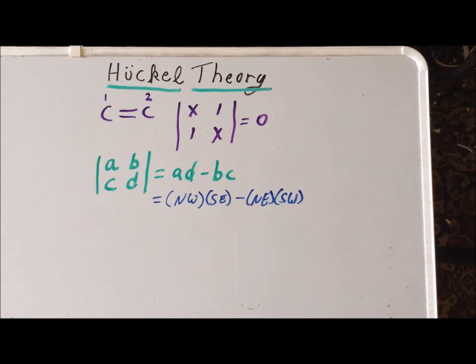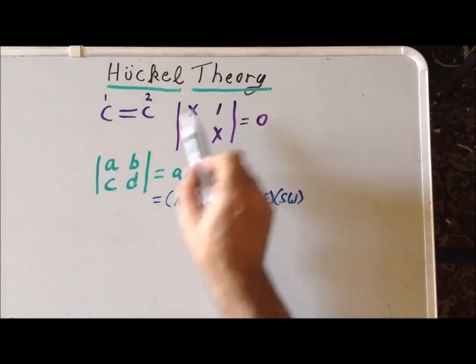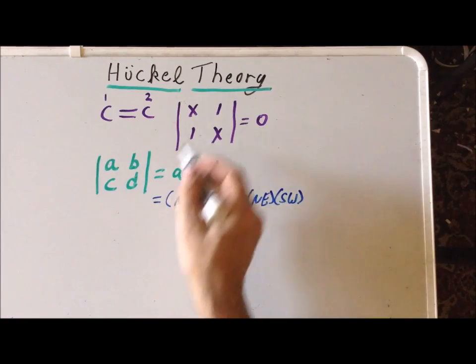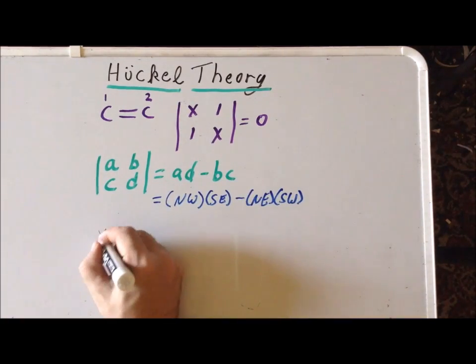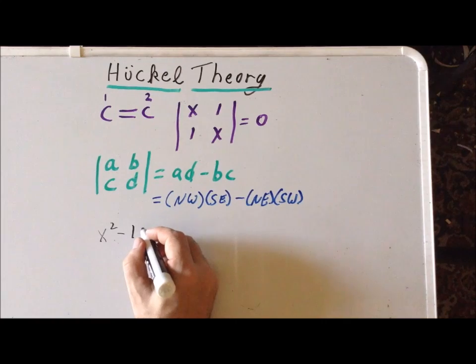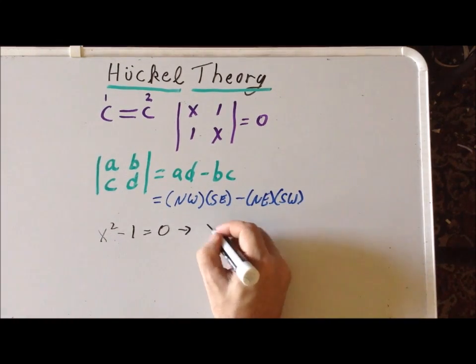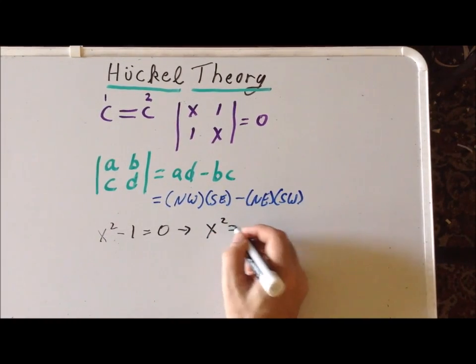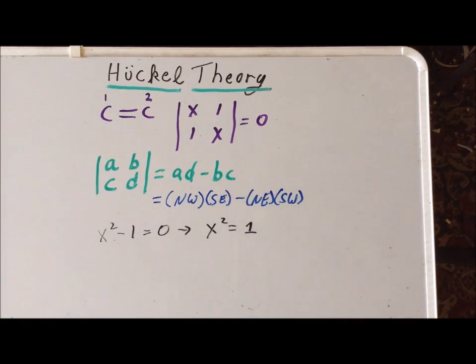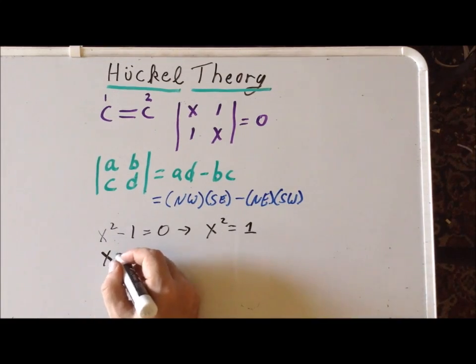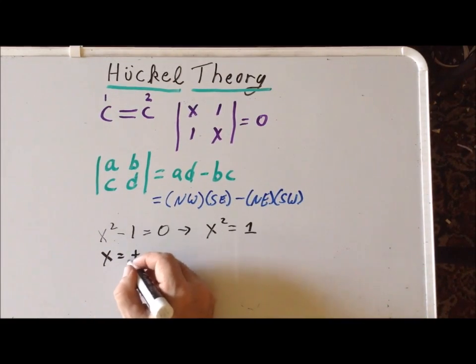Using the definition of a 2 by 2 determinant, we have X times X minus 1 times 1. This converts to X² minus 1 equal to 0. We simply solve for X. This gives us X² equals 1. Taking the square root of each side, we have two solutions: X equals plus or minus 1.